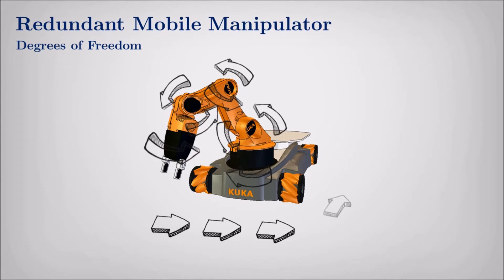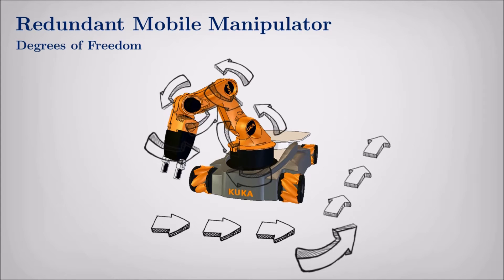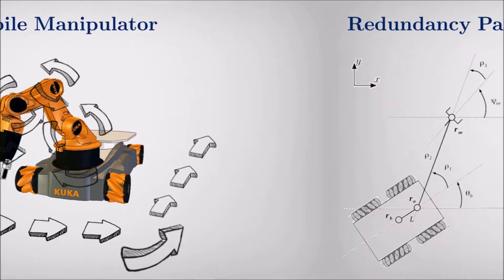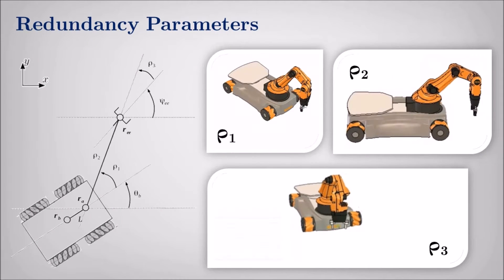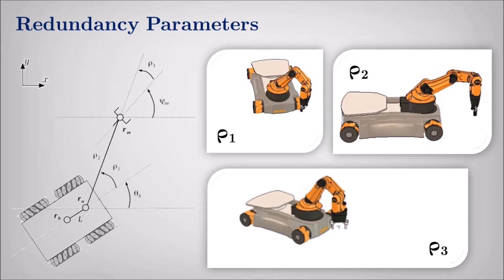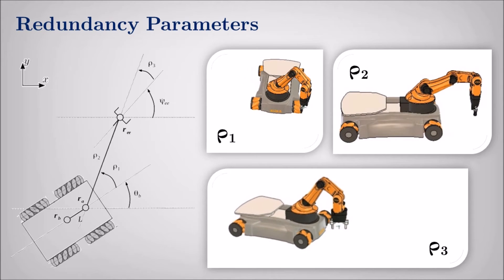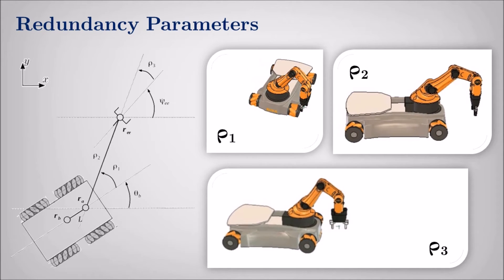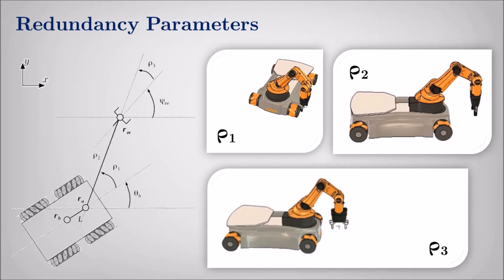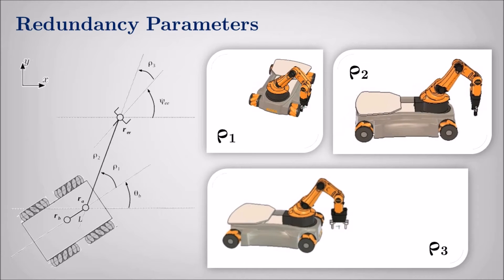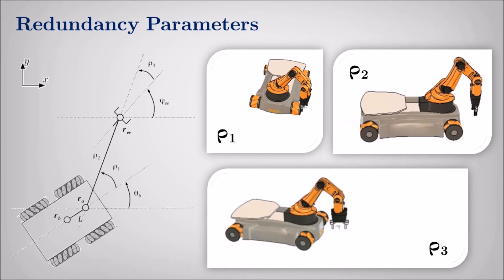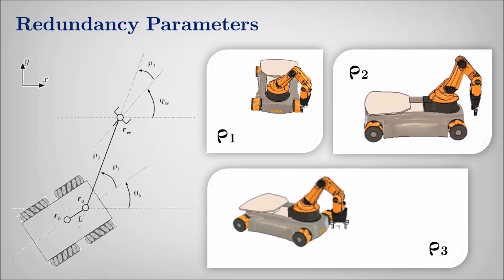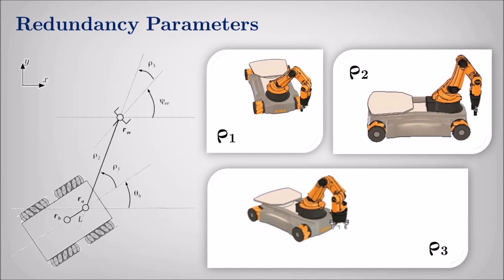So, how can the exceeding degrees of freedom be used in a smart way? We propose a general approach for modeling mobile manipulator's redundancy based on the so-called redundancy parameters, as well as some techniques for redundancy resolution.